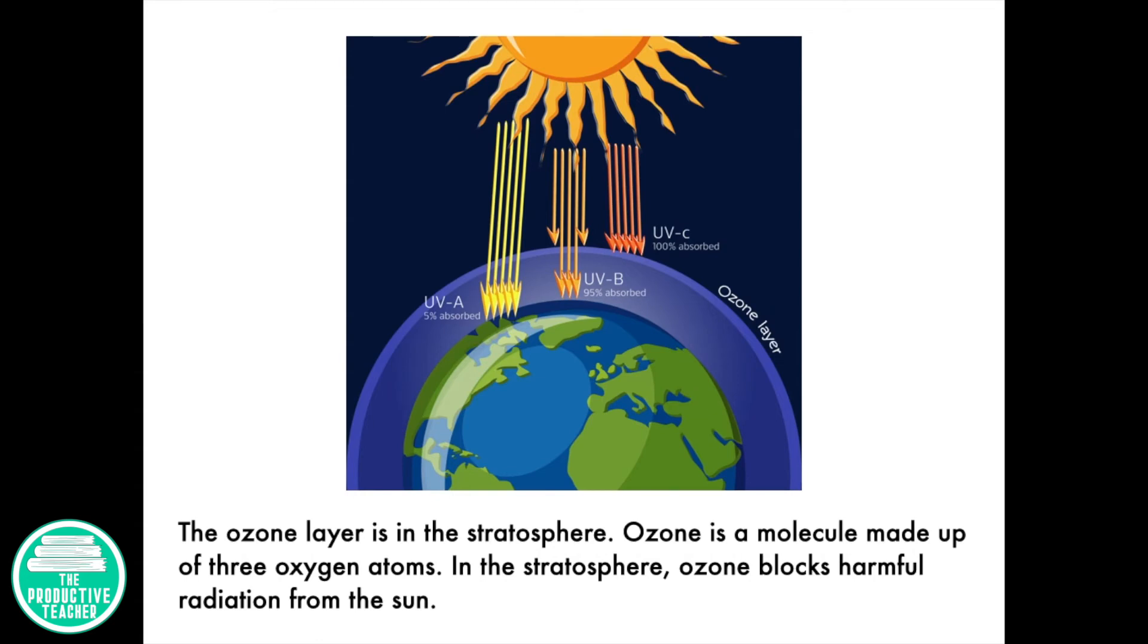The ozone layer is in the stratosphere. Ozone is a molecule made up of three oxygen atoms. In the stratosphere, ozone blocks harmful radiation from the sun.